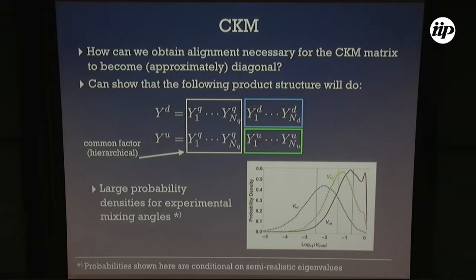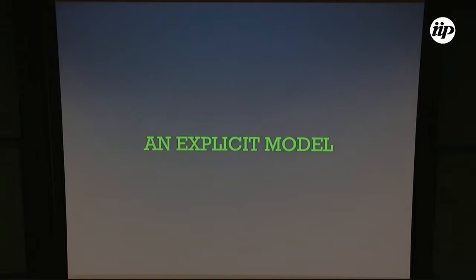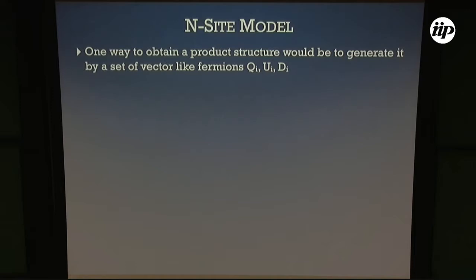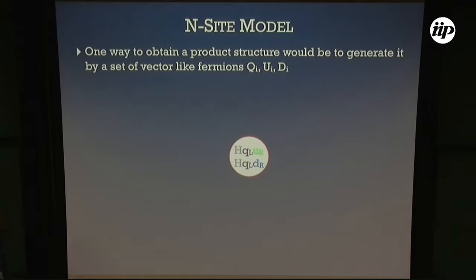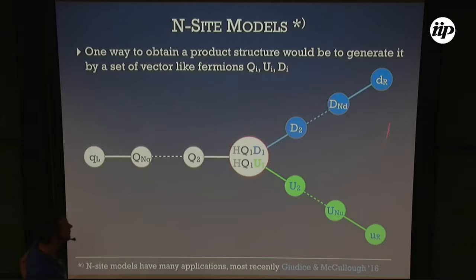Now let's look at an explicit model that has this product structure, since the previous discussion was purely ad hoc. One way is to use so-called N-site models, introducing a number of vector-like fermions QI, UI, DI in the quark sector. Instead of coupling the Higgs directly to the chiral quarks, you couple them to these vector-like fermions, separating the chiral fields from the Higgs in theory space.